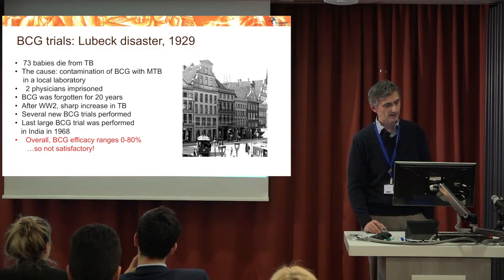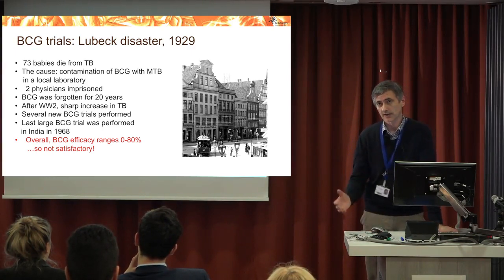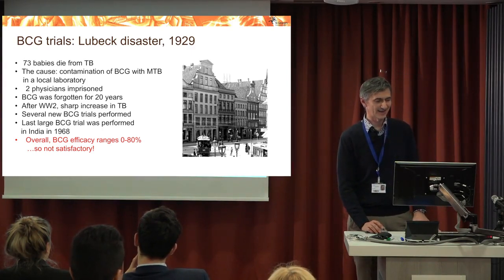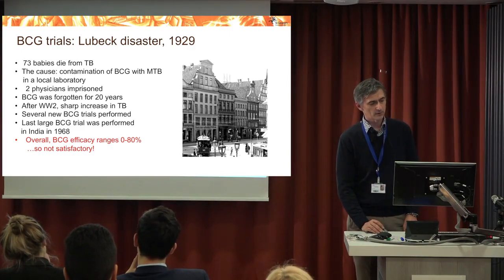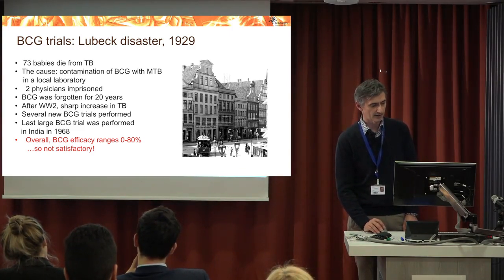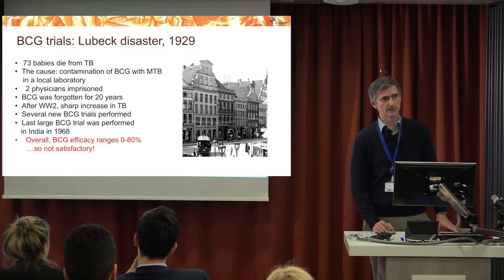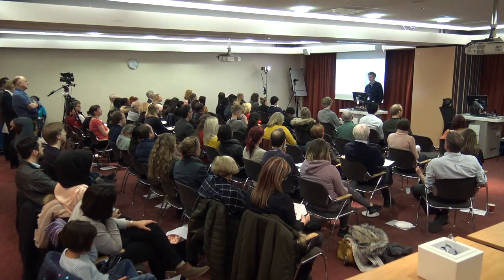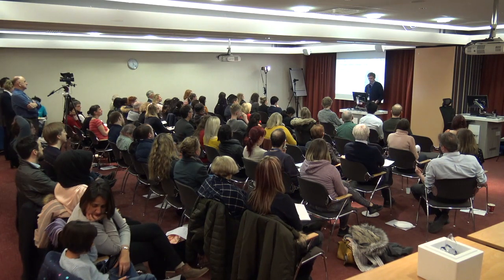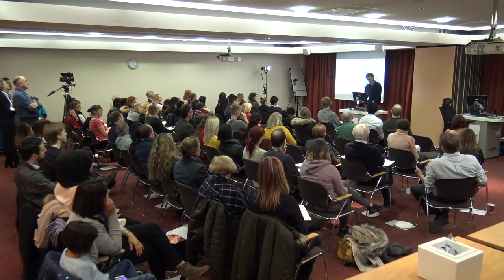Only after the Second World War, because of a sharp increase in TB incidence, was BCG reconsidered. A flurry of about 10 or 11 clinical trials were conducted in the 1950s and 60s. The overall results showed BCG efficacy globally was about 0 to 80% — really a lottery depending where you live. That is far too wide a range, and clearly something needs to either replace BCG or boost it to make it work better.